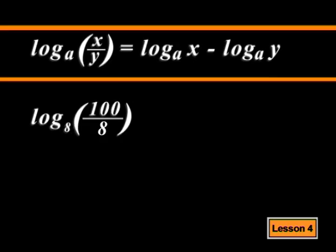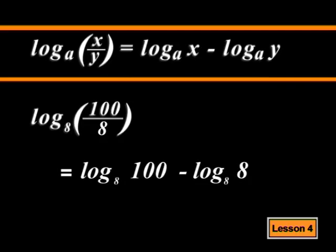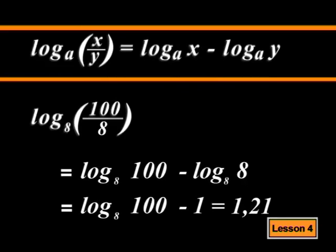The law says that if we divide the numbers, we can subtract the logs. Alright, that means that this must simplify to log base 8 of 100 minus log base 8 of 8. And this can be simplified even further using law 2. Log 8 of 8 is then equal to 1. So we get log base 8 of 100 minus 1. Good, Debuho.